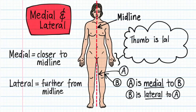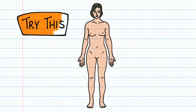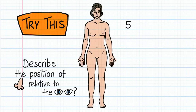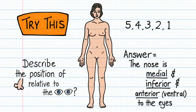Another example would be your thumb being lateral to your little finger on your hand. Now that you've mastered the basics, try to answer the following question: using correct anatomical terminology, can you describe the position of the nose relative to the eyes? Hopefully you answered: the nose is medial, inferior, and anterior to the eyes.